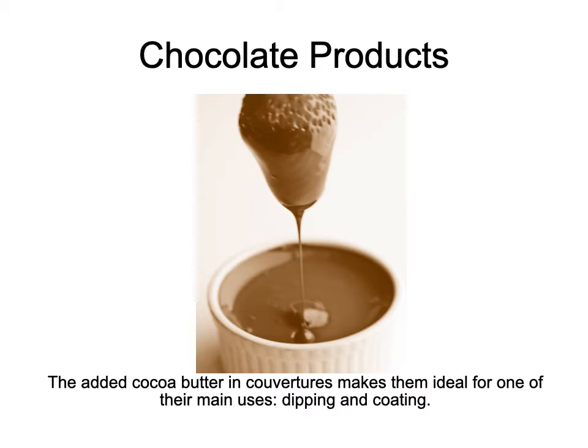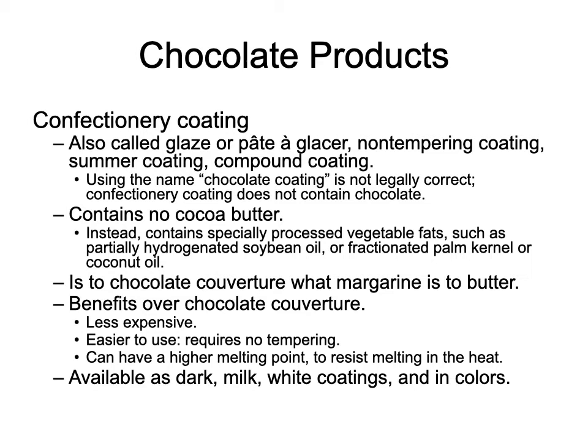Confectionery coating — also called glaze, summer chocolate, pâte glacé, non-tempering chocolate, or compound coating — is not legally chocolate. Instead of cocoa butter, it contains processed vegetable fats such as partially hydrogenated soybean oil, palm kernel oil, and coconut oil, which harden at room temperature without tempering. It is to couverture what margarine is to butter — less expensive, super easy to use, and great when you have less experienced employees who don't know how to temper.